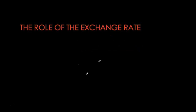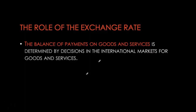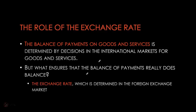The balance of payments on financial account is determined primarily by interest rates. We just saw that the balance of payments on goods and services is determined by the market for goods and services — these are international markets. The next question is: what ensures that the balance of payments is actually balanced? The answer is the exchange rate, which ensures that our current account is equivalent to our financial account, or that the summation of both equals zero.